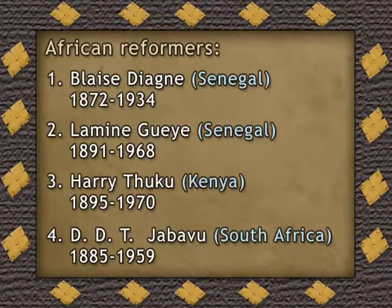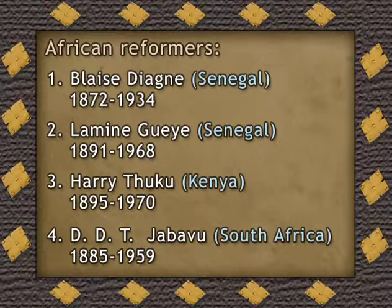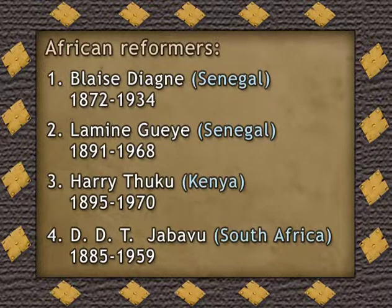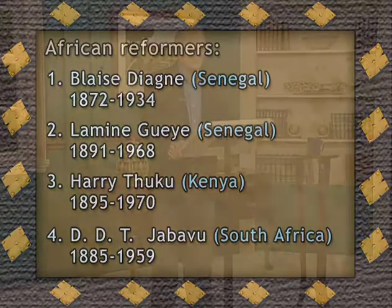The degrees of success realized by this first generation of proto-nationalists varied widely. For every Blaise Diagne or Lamine Gueye working out of their bases in Dakar and Saint-Louis in Senegal, able to obtain legal status of citizen rather than subject for thousands in French West Africa, there was a Harithuku in Kenya jailed at the time of the First World War for his protests. Or a D.D.T. Jabavu in South Africa — a real visionary full of hope at the time of the First World War who, by the time of the second, had retreated into a very bitterly felt internal exile.